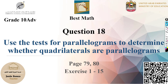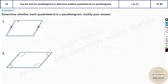Question 18 is to use tests for parallelograms to determine whether quadrilaterals are parallelograms or not. We need to know a few basic things about parallelograms. Parallelogram means, if you have opposite sides parallel, opposite sides equal — these are a few criteria — and opposite angles are equal.